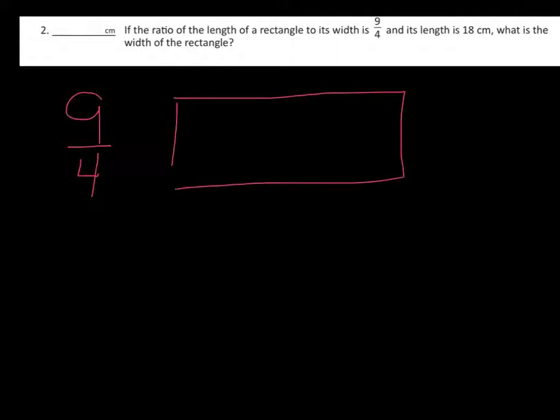Okay, this next problem number two is a ratio problem. We have a ratio of nine to four of the length of a rectangle to the width. So we don't know what the length and width measurements are, but we know nine times x is the length and four times x is the width. Whatever x is we don't know, that's what we have to find. So we know that nine x, the length, equals 18. That's what it says right here, the length is 18.